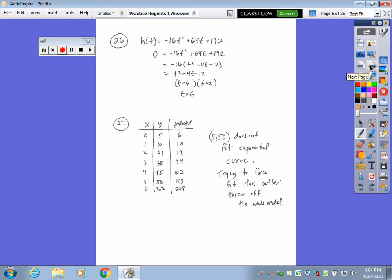Next question is question 26, has to do with throwing a water balloon off the top of a building. So they give you the height as a quadratic. They want to know when will it hit the ground. So you're trying to figure out t when the height is 0. So I set the equation equal to 0, and I solved it by factoring. I rejected the negative time answer.